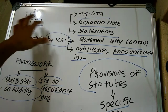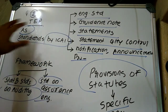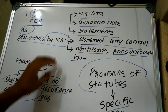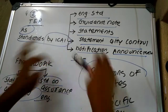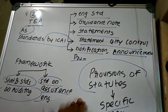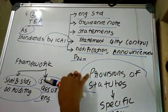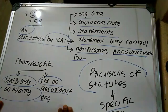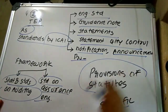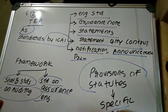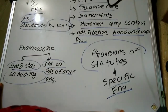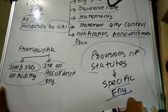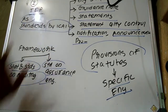Technical, ethical, and professional standards include: accounting standards, engagement standards issued by ICAI, guidance notes, statements, statements on quality control issued by ICAI, notifications, announcements and pronouncements, framework for standards on auditing, framework for standards on assurance engagements, and provisions of relevant statutes applicable to specific audit engagements being reviewed as per the directions of ICAI.